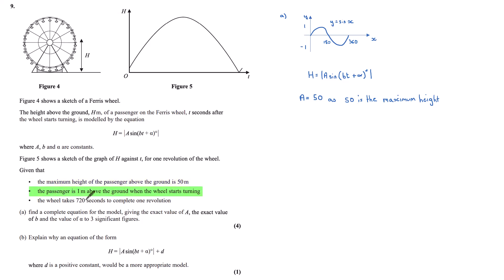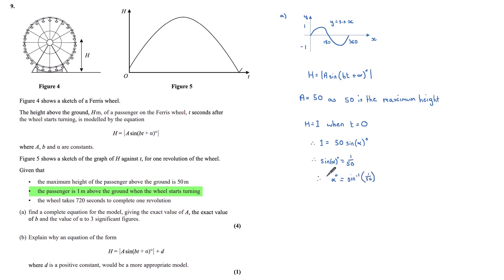The next point: the passenger is one metre above the ground when the wheel starts turning, meaning h equals one when t equals zero. Substituting into our equation gives one equals 50 sine alpha — since b times zero is zero. Rearranging by dividing through by 50: sine alpha equals 1/50. Therefore alpha equals the inverse sine of 1/50, giving a value of approximately 1.145°, which is 1.15 degrees to three significant figures.